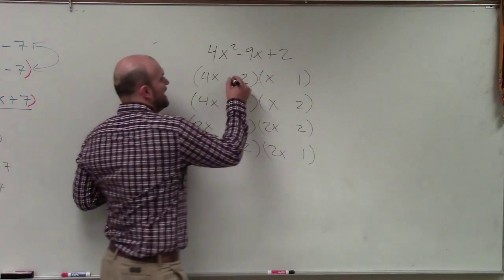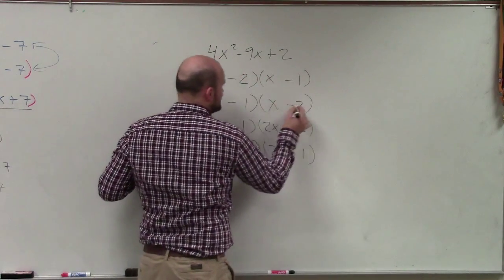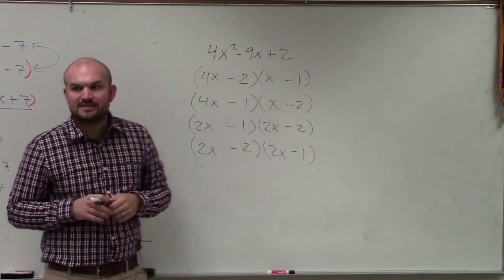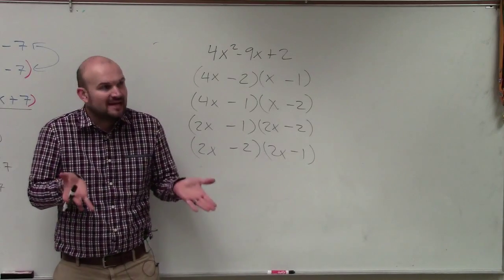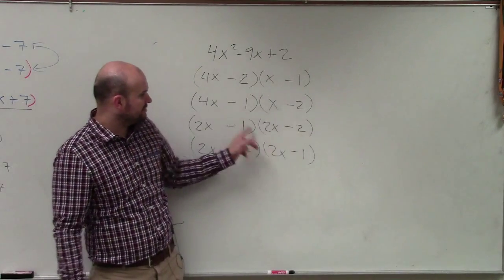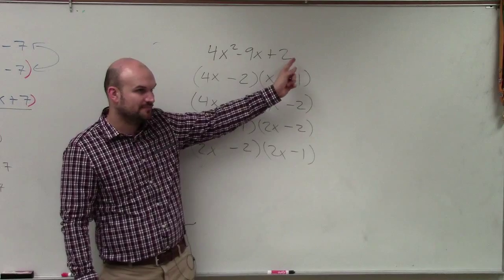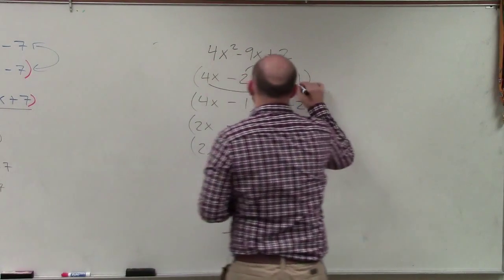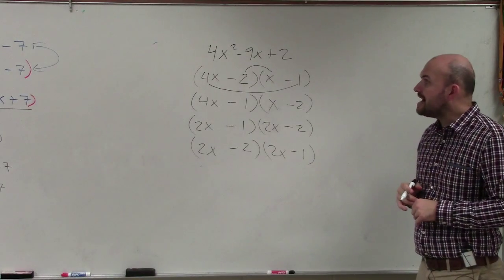So therefore, both my factors have to be negative. I don't even have to concern myself with the positive factors. Do you guys agree that all these end terms give me positive 2? But when I multiply my inner and my outer, I need to get negative 9.